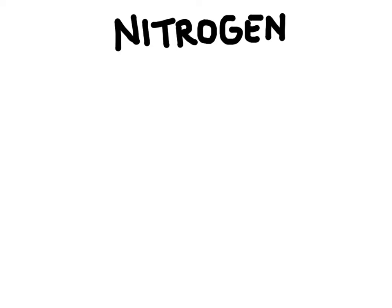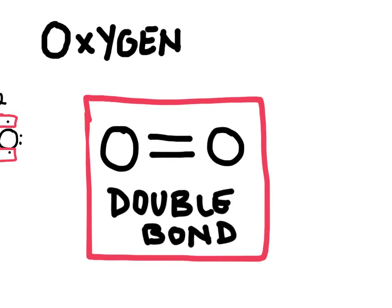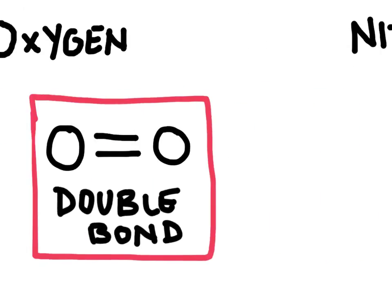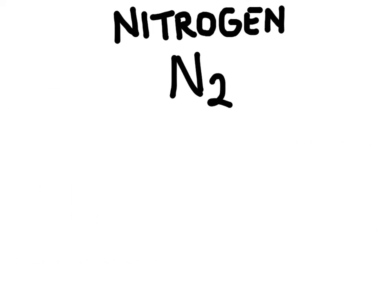Here's our next example, molecular nitrogen. It's also found diatomic, so two nitrogen elements bonded together. If we look at the periodic table, we can see that nitrogen is over here in group five, and so it has five valence electrons. So let's put those around each of the nitrogens.